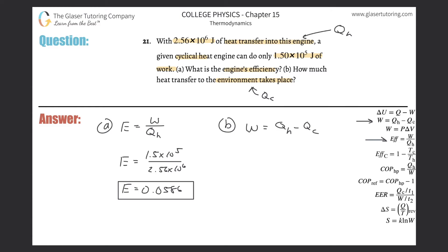We want to find Q sub C. So Q sub C will be equal to Q sub H minus the work. Q sub C will be equal to 2.56 times 10 to the 6th joules, minus the work, which was 1.50 times 10 to the 5th.